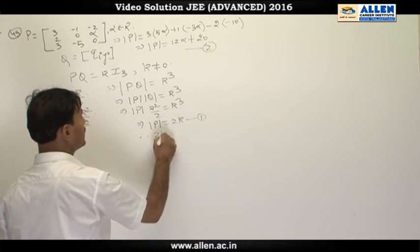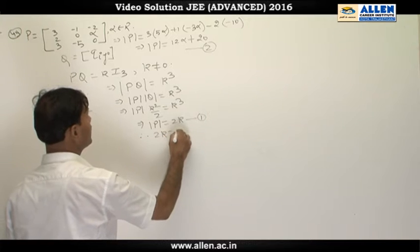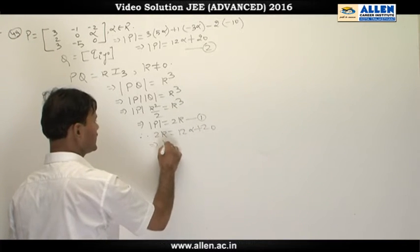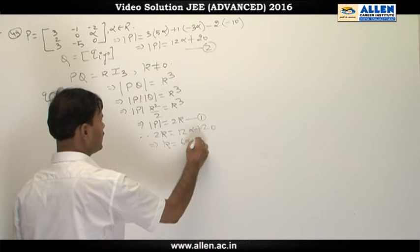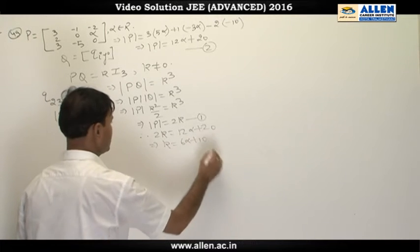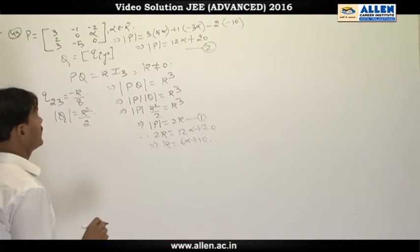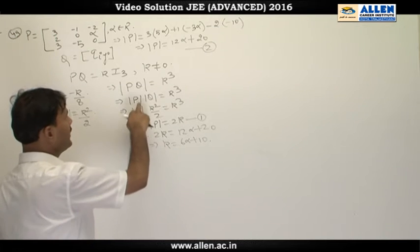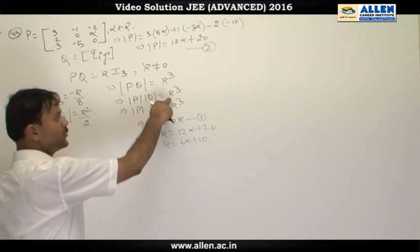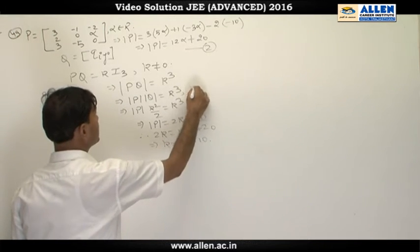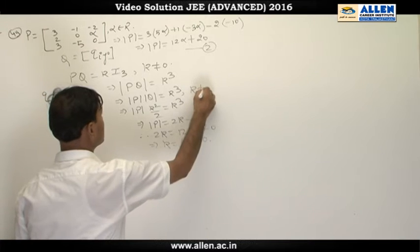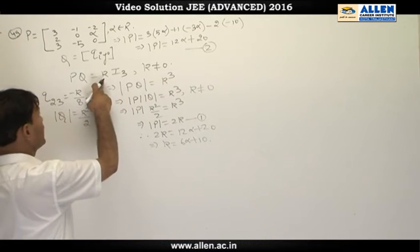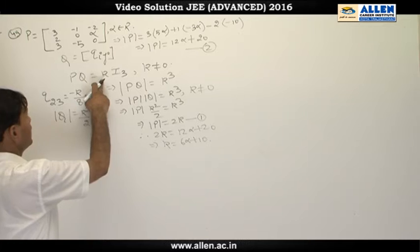Equating the two expressions for det(P), we get 2k = 12α + 20, which implies k = 6α + 10. Since det(P) × det(Q) = k³ and k ≠ 0, matrix P is invertible, so we can pre-multiply the equation PQ = kI₃ by P⁻¹.